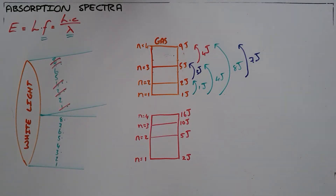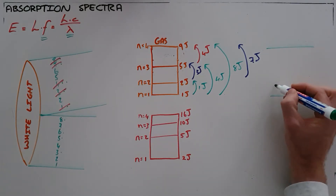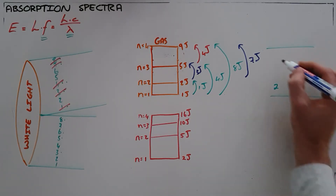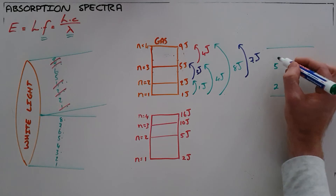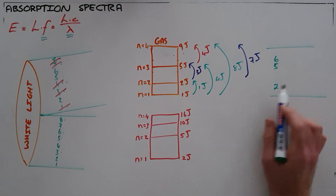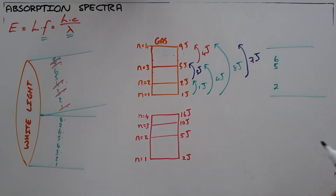The light emerging from the other side is now missing a number of energies, so we see only part of that spectrum emerging because part of the spectrum has been absorbed out of that light.